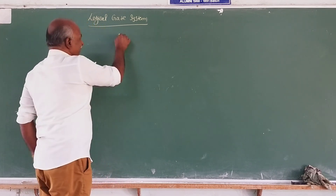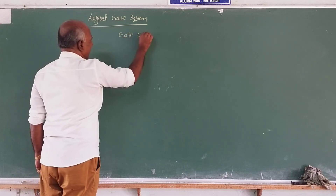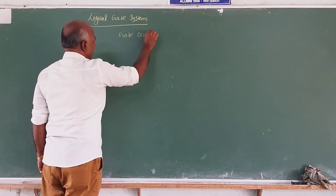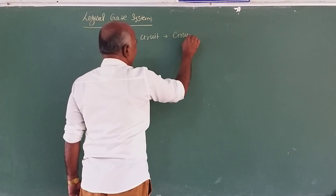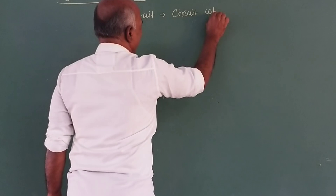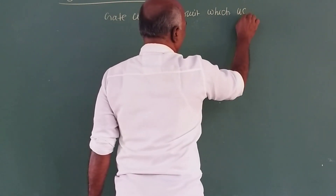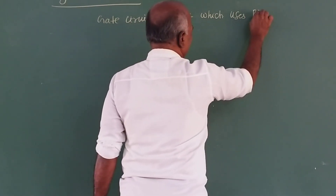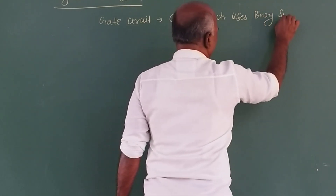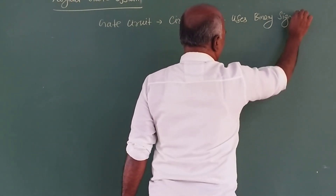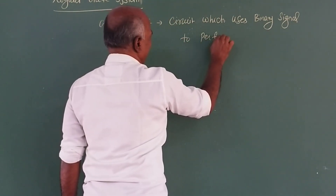So, a gate circuit is nothing but a circuit — a logical gate circuit — which uses the binary signal to perform the mathematical operation.